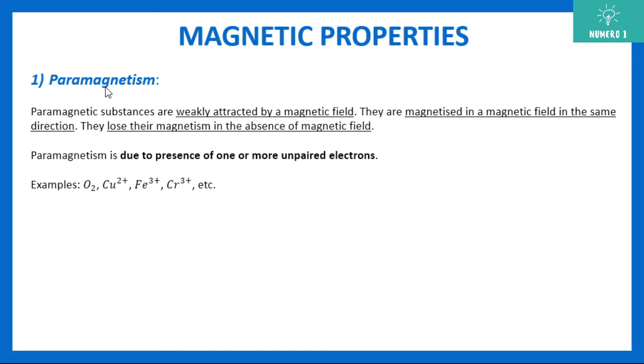Next is first type of substances is actually paramagnetic substances. So we are dividing into different types of substances according to their magnetic property. So first is paramagnetic substances. These substances are actually weakly attracted by magnetic field. They get magnetized in magnetic field in same direction. So basically they are getting attracted and they lose their magnetism in the absence of magnetic field. Now this happens due to the presence of one or more unpaired electron. Remember that unpaired electrons is very important. You can see some of the example that is O2, Cu2 plus, Fe3 plus, Cr3 plus, etc. So any substance or any atom is having unpaired number of electron, it will fall in the category of paramagnetic substances.